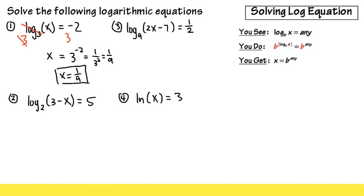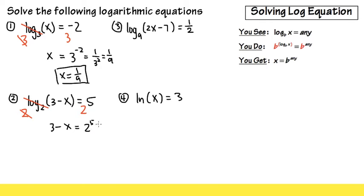For the second one, very similar, because we have log base 2 and the log part is by itself on the left-hand side already. Inside the parentheses we have 3 minus x, and on the right-hand side we have 5. Then we do 2 to this power and 2 to that power — 2 and this cancel — and you get 3 minus x is equal to 2 to the 5th power. Be sure you do 2 times 2 times 2 times 2 times 2, and altogether we get 32.